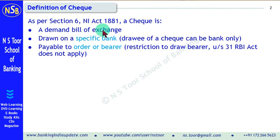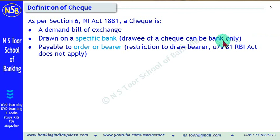Basically, a check is a demand bill of exchange, and it can be drawn on a specific bank only. This means the drawee of a check can be a bank only — no one else. In a normal bill of exchange, anyone can be the drawee, including a bank. But in case of a check, only a bank can be the drawee.